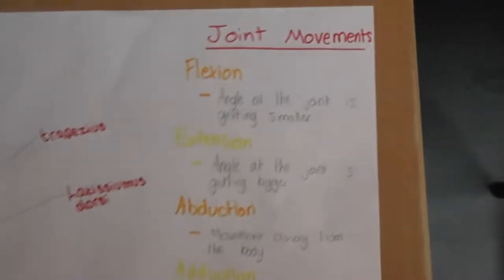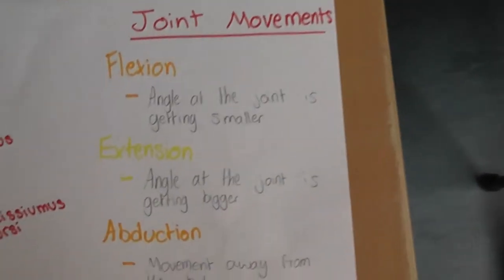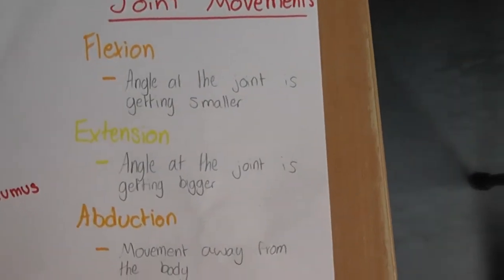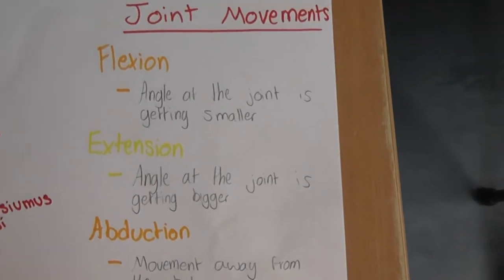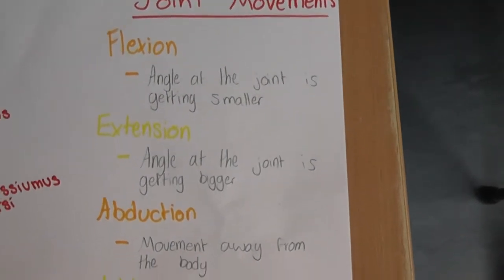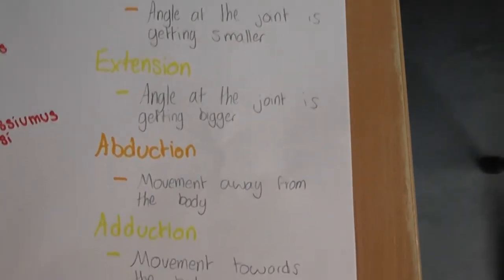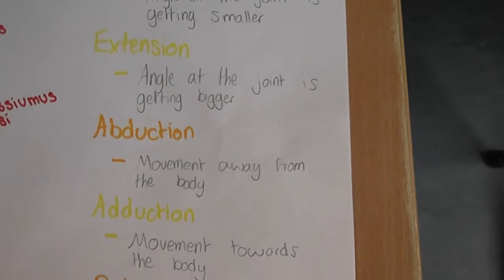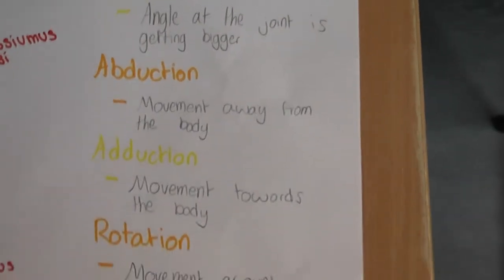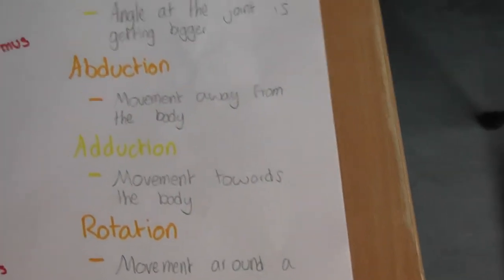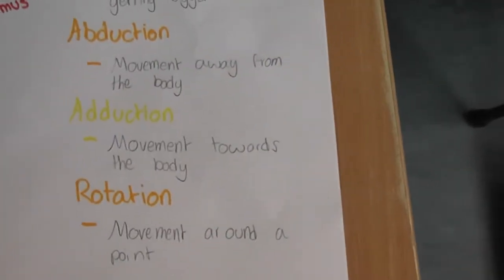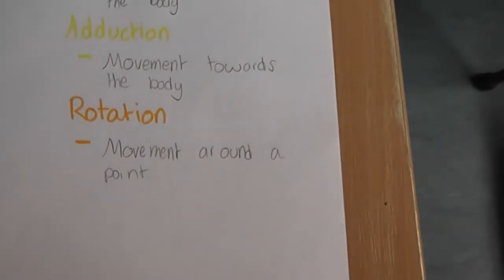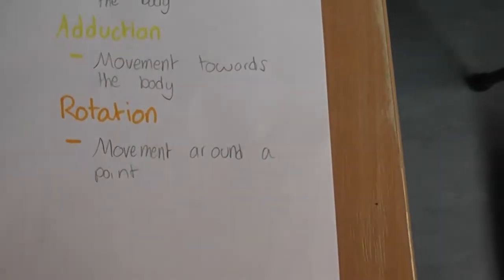Joint movements: flexion is the angle at the joint getting smaller. Extension is the angle at the joint getting bigger. Abduction is movement away from the body. Adduction is movement towards the body. Rotation is movement around a point.